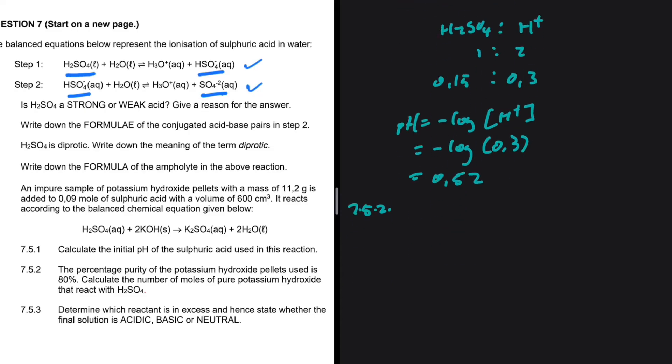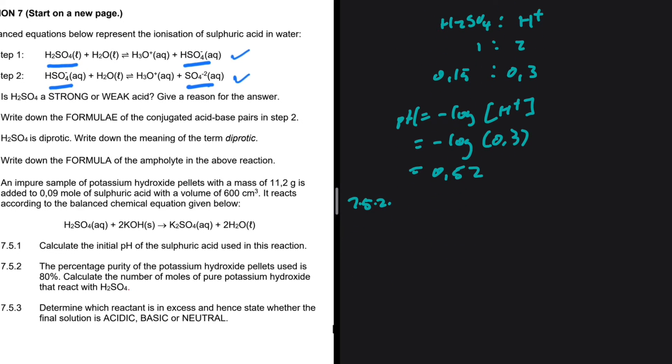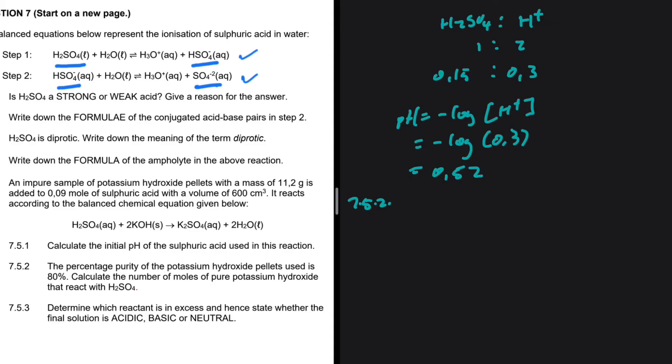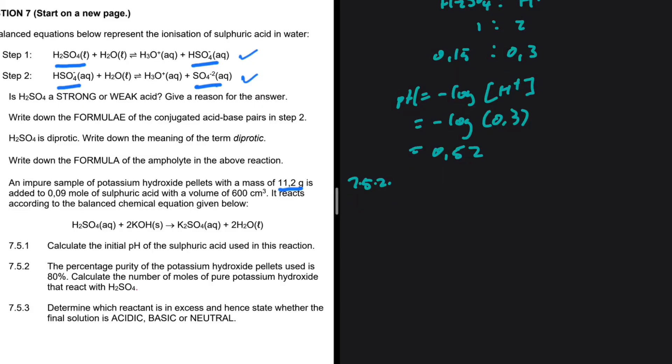7.5.2. The percentage purity of the potassium hydroxide pellets used is 80%. Calculate the number of moles of pure potassium hydroxide that react with H2SO4. The mass of the impure sample is 11.2. We want to calculate the number of moles of pure potassium hydroxide. The question we're asking ourselves is, what is 80% of 11.2? So the mass of pure is 11.2 multiplied by 80%, which is 8.96 grams.